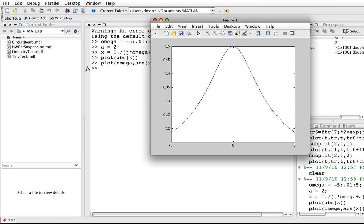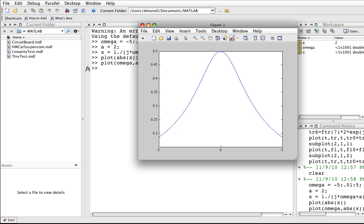So you can see that at a value of omega equals 0, it has its largest value which is 1 half, and as omega gets large, either positively or negatively, it goes to 0.